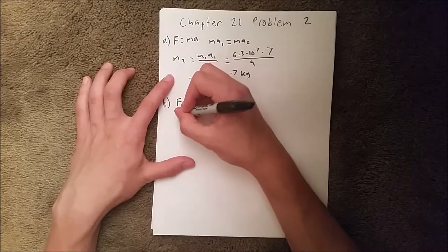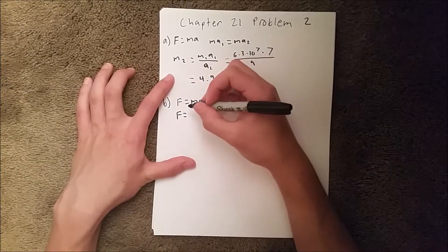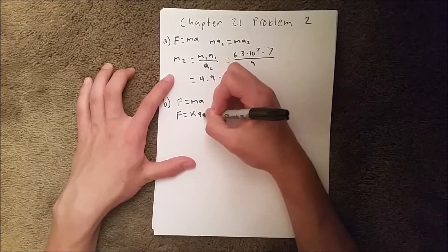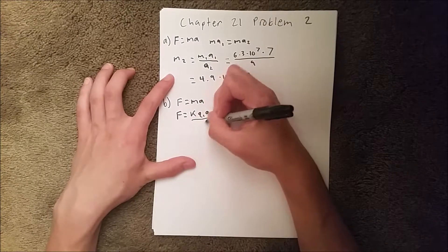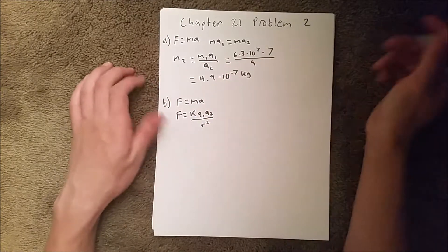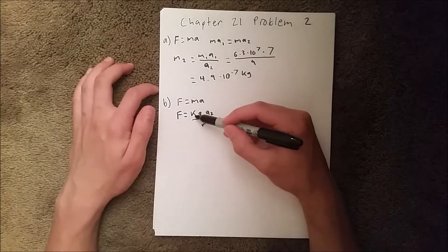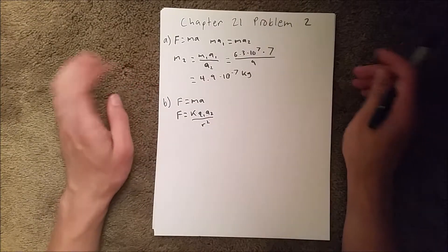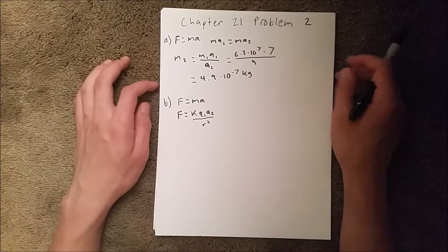But we also can write force as k times q₁q₂ over r squared, where r is the distance between them and k is our constant 1 over 4π epsilon sub zero.